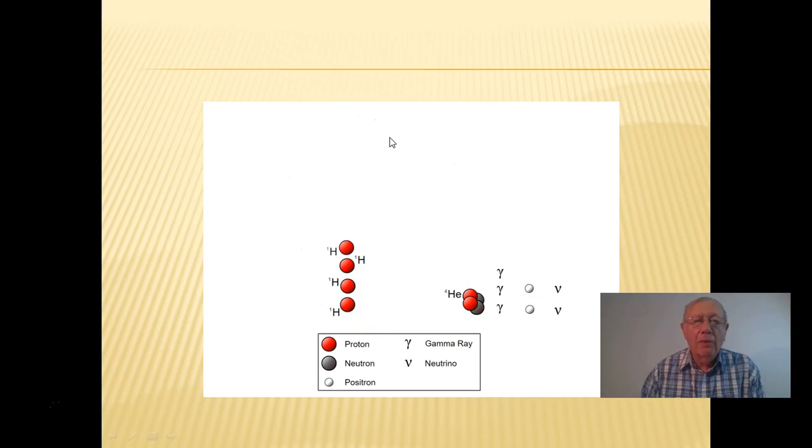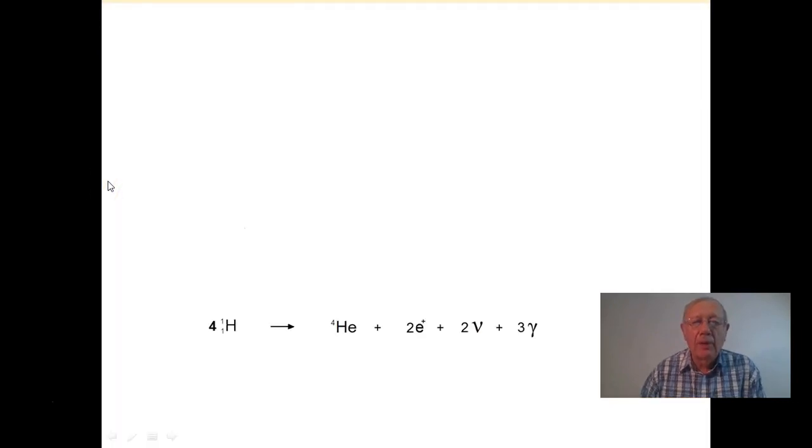So the overall reaction, as you can see, is the same as what it was in the other case, or very similar anyway. Four hydrogen nuclei combining to form a helium nucleus, two positrons, two neutrinos, and three gamma rays. So off they go to provide energy for other reactions that occur in the Sun or the Star.